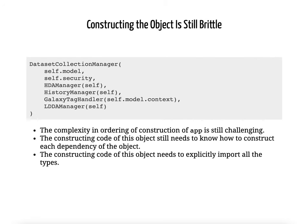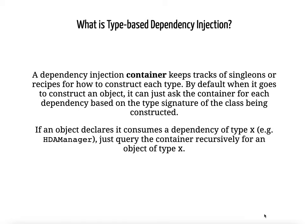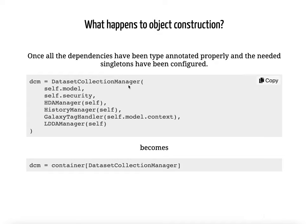The problem with that approach is that we've created complexity inside the constructor for complexity in calling the constructor. Now the thing that's initializing the dataset collection manager needs to know what these six components are and how to build them. The solution we use to address this is type-based dependency injection. The idea is that we have a container which keeps track of recipes for how to build objects of a given type, and when we need a dependency for an object, we can recursively check the container for how to build that dependency. With this approach, constructing the dataset collection manager becomes as easy as saying: container, give me your dataset collection manager.